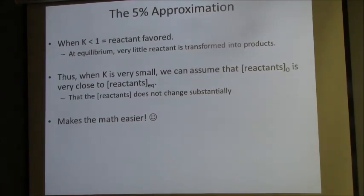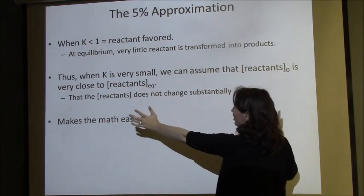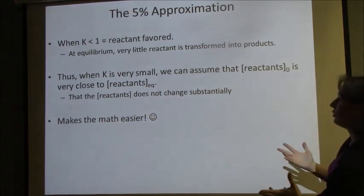If K is less than 1, we're assuming that the reaction is very reactant-favored, which means that whatever my reactant is, is going to be present pretty much at the same amount at equilibrium. In other words, the initial concentration of those reactants and the equilibrium concentration of those reactants is essentially the same, or very close to the same.